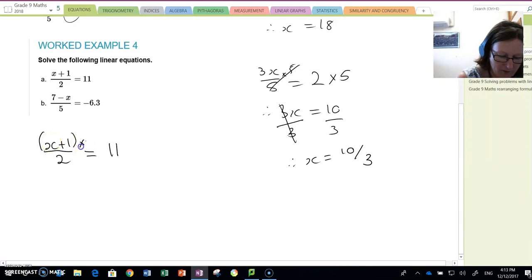So we have to undo the 2 first by timesing by 2. So then we have x plus 1, our package, is equal to 22. We subtract 1. So x is equal to 21.